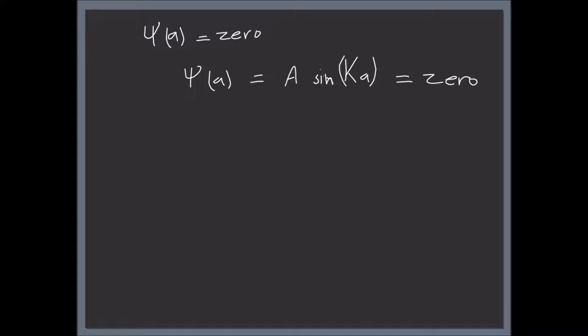We cannot make the A equal to 0 because that's going to blow up the first solution. In order for this to be true, the sine of Ka has to be equal to 0, which leaves us with Ka must be equal to 0 or plus or minus pi, or plus or minus 2 pi, or plus or minus 3 pi.